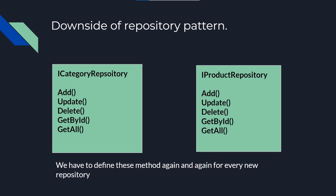Now let's talk about the downside of the repository pattern. Suppose we have iCategoryRepository which has add, update, delete, getById, and getAll methods, and we have another repository named iProductRepository with the same methods. Here we have only two repositories, but when the project grows bigger, the number of repositories will also increase, and we have to write these same methods in every repository.